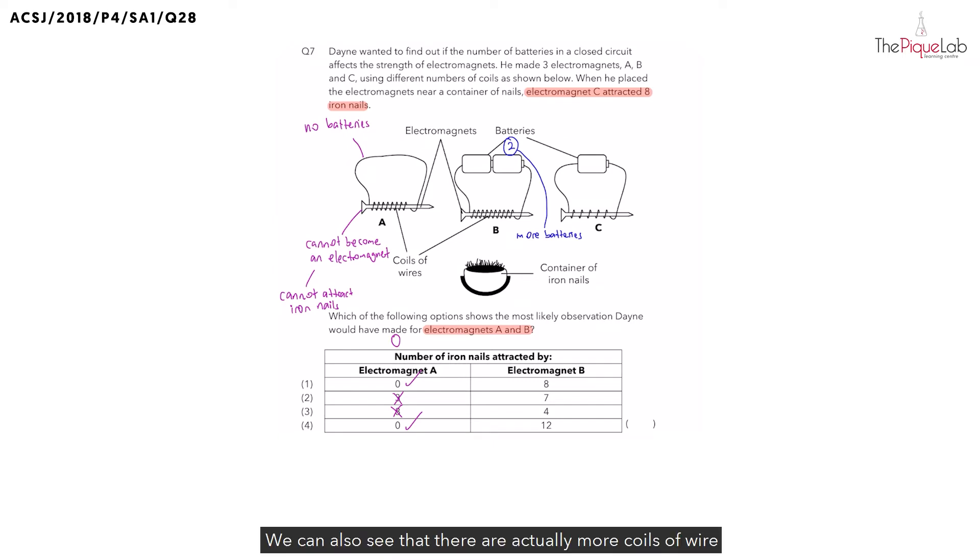There are more batteries and coils around the nail. When we look at the number of batteries and the number of coils of wire around the nail, we know that these are factors that affect the strength of an electromagnet.